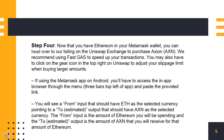Step 4: Now that you have Ethereum in your Metamask wallet, you can head over to our listing on the Uniswap exchange to purchase Axion. We recommend using Fast Gas to speed up your transactions. You may also have to click on the gear icon in the top right on Uniswap to adjust your slippage limit when buying larger amounts. If using the Metamask app on Android, you'll have to access the in-app browser through the menu and paste the provided link. You will see a 'From' input that should have ETH as the selected currency, pointing to an estimated output that should have AXN as the selected currency. The 'From' input is the amount of Ethereum you will be spending, and the estimated output is the amount of AXN that you will receive for that amount of Ethereum.